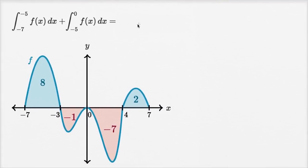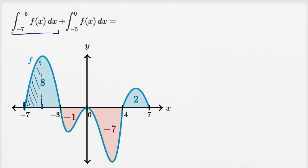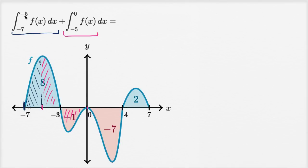Here I have the integral from negative seven to negative five, then the integral from negative five to zero of f of x dx. I want to find the area from negative seven to negative five, then from negative five to zero. An easier way to do this is to realize I'm going from negative seven to negative five, and then from negative five to zero, integrating the same f of x dx.